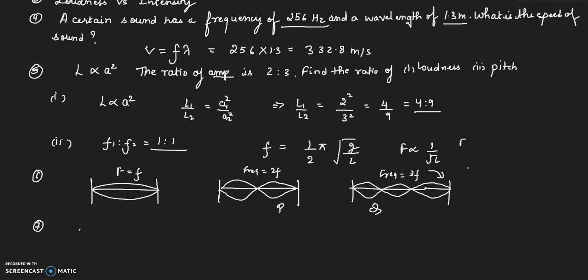Now questions on potential difference and resistance. They may ask you numericals on this like V is equal to W by Q. V is the potential difference, W is the work done, and Q is the charge. They will give you Q as 1 coulomb and potential difference as 6 volt, and ask you to find out the work done. That will be W equals to V into Q, so answer will be 6 joules. The units must be mentioned after you solve numericals.